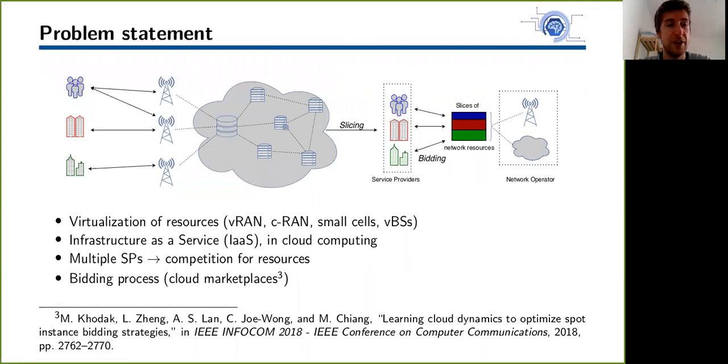The virtualization of resources is enabled thanks to new technologies such as virtual base stations, small cells, or virtual radio access network. The classical network architecture where users connect to base stations which are linked to the backbone network is changed to a virtualized network where now services can bid resources of the virtualized network slices, which are composed of concrete physical network resources from bandwidth to cloud resources.